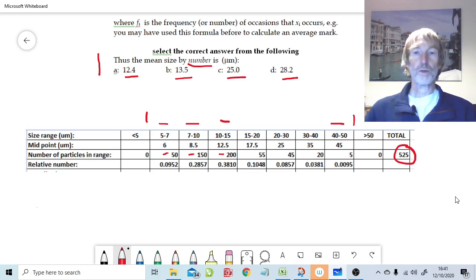We could calculate the mean in the conventional sort of way. We're going to need a single value to represent the range here. Let's take 6 microns for the first range. This one here is 8.5 microns. These are the midpoints. And how many particles do we have in that range? We have 50.